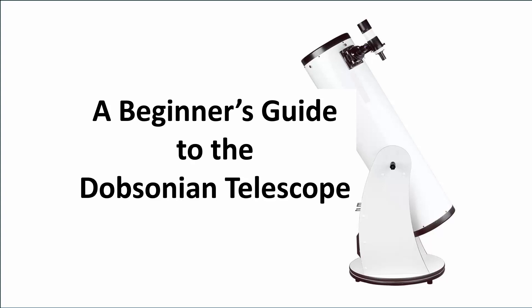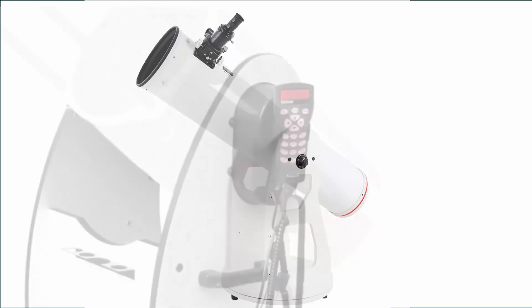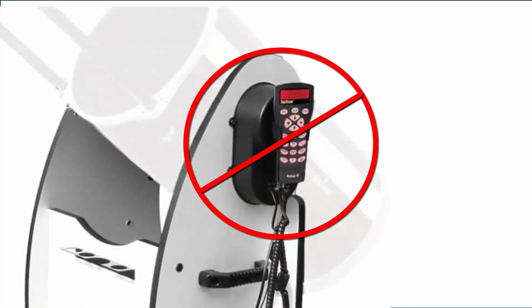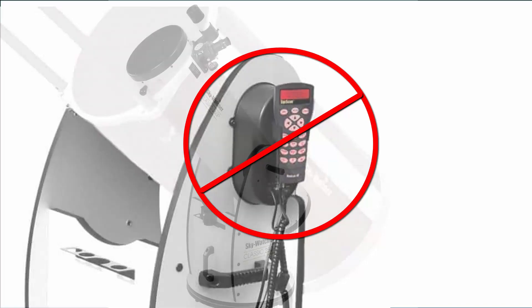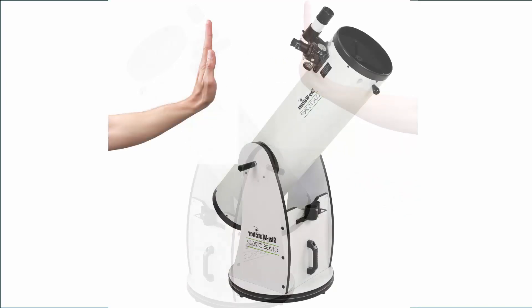This video is designed for Dobsonian telescope users with little or no previous experience. I also assume that your scope is the simplest Dobsonian design that lacks any automation electronics or tracking motors. These simple Dobsonians are commonly referred to as push-to Dobs, as you do the pushing to target objects rather than electronics or motors.